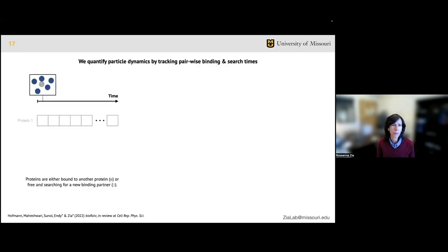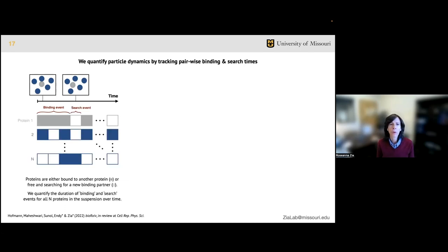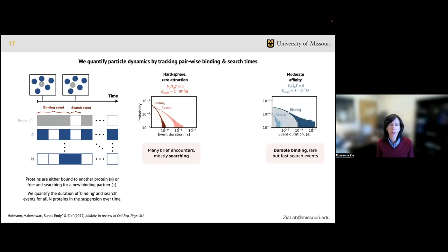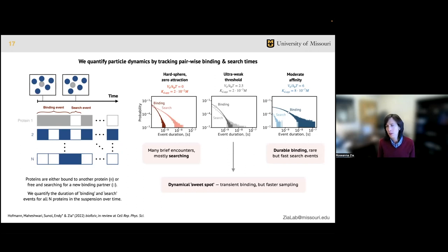To answer this, we quantified particle dynamics where we track the state of individual particles as either bound or unbound, and over time quantify the duration spent by each protein in encounters and freely diffusing. We do this for all proteins in the suspension and calculate the probability distribution of the duration of these binding and search events. In the hard sphere case, proteins tend to spend most time freely searching but still experience many brief encounters. In the moderate affinity limit, proteins spend much more time bound together than diffusively searching. Ultra-weak protein-protein interactions operate at a dynamical sweet spot between these two limits - the Goldilocks zone, not too long, not too short, but just right.